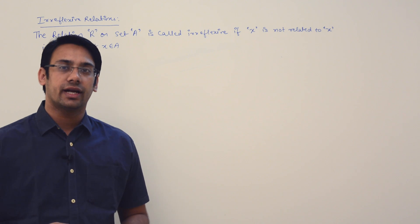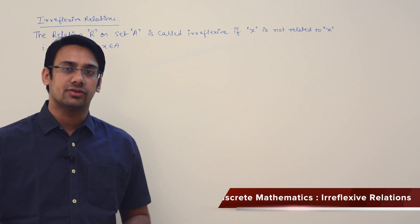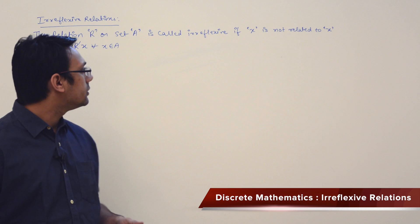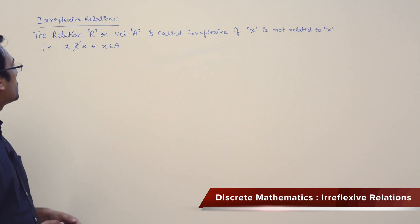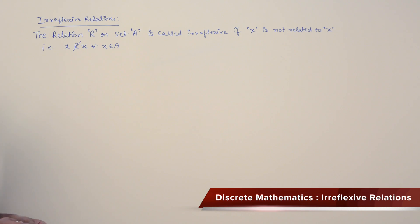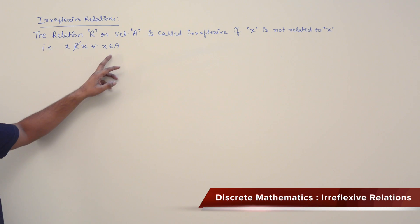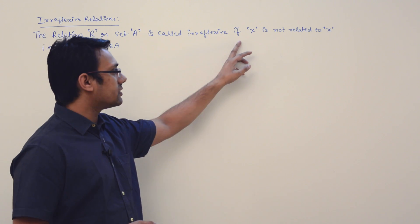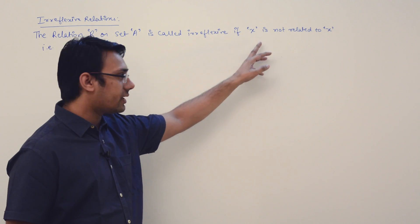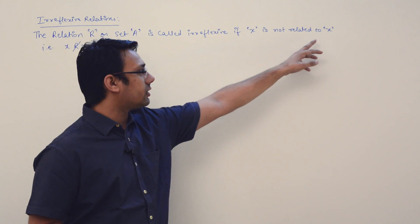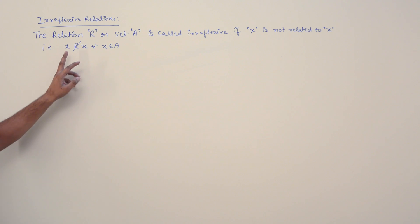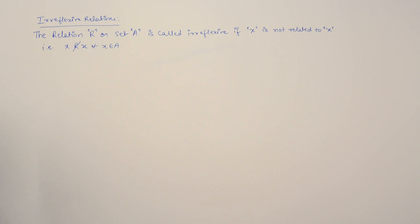Now let us look at another category of relations which are called irreflexive relations. A relation R on a set A is called irreflexive if X is not related to X for all X belonging to the set A.